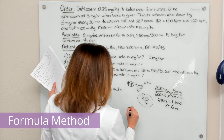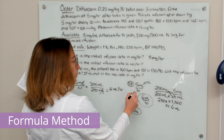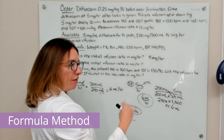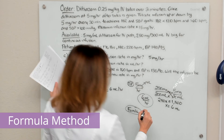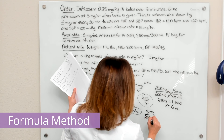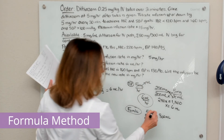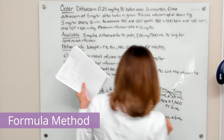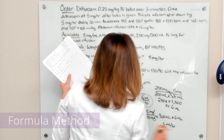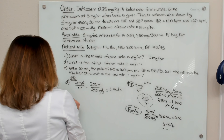With the formula method for Part D, we're again converting 5 milligrams per hour to milliliters per hour. Desired over have times vehicle: our desired is 5 milligrams, what we have is 250 milligrams in 300 mL of solution as our vehicle. Doing the math gives us 6 milliliters per hour. So those are three different ways to solve Part D.